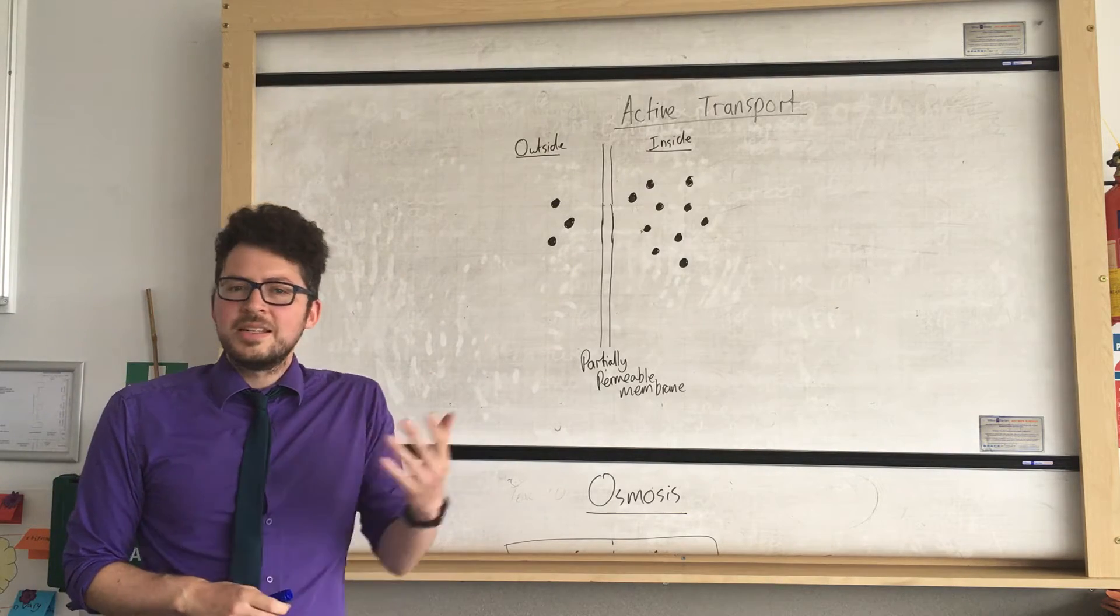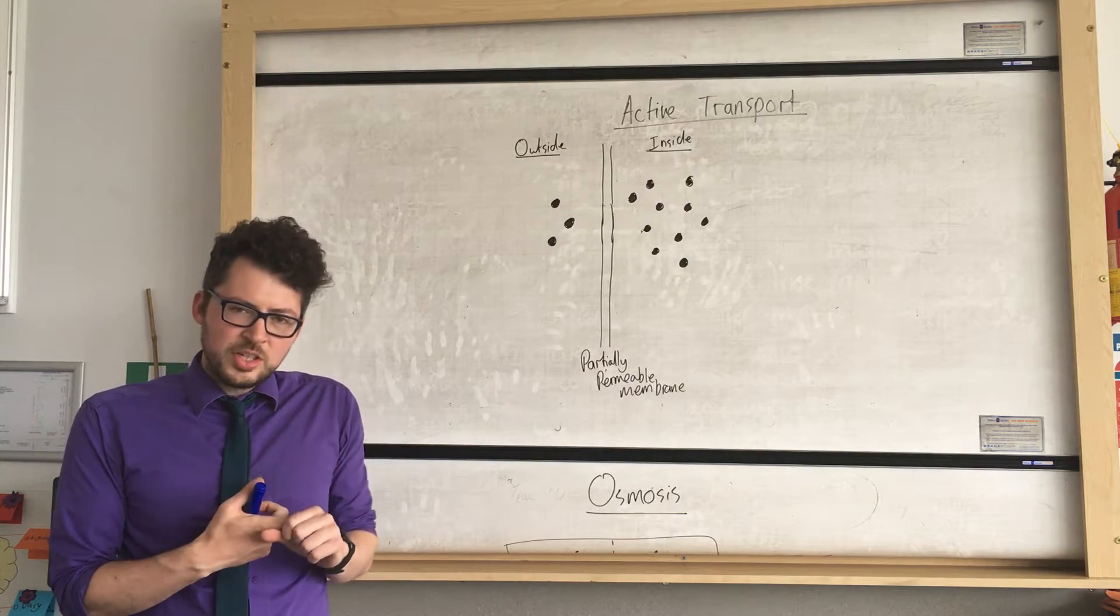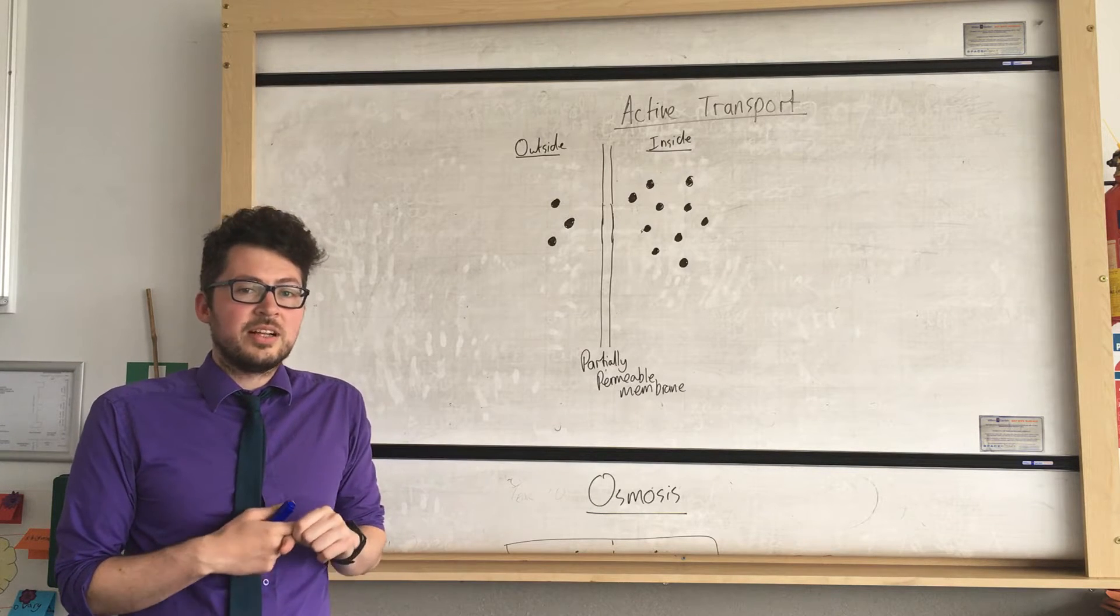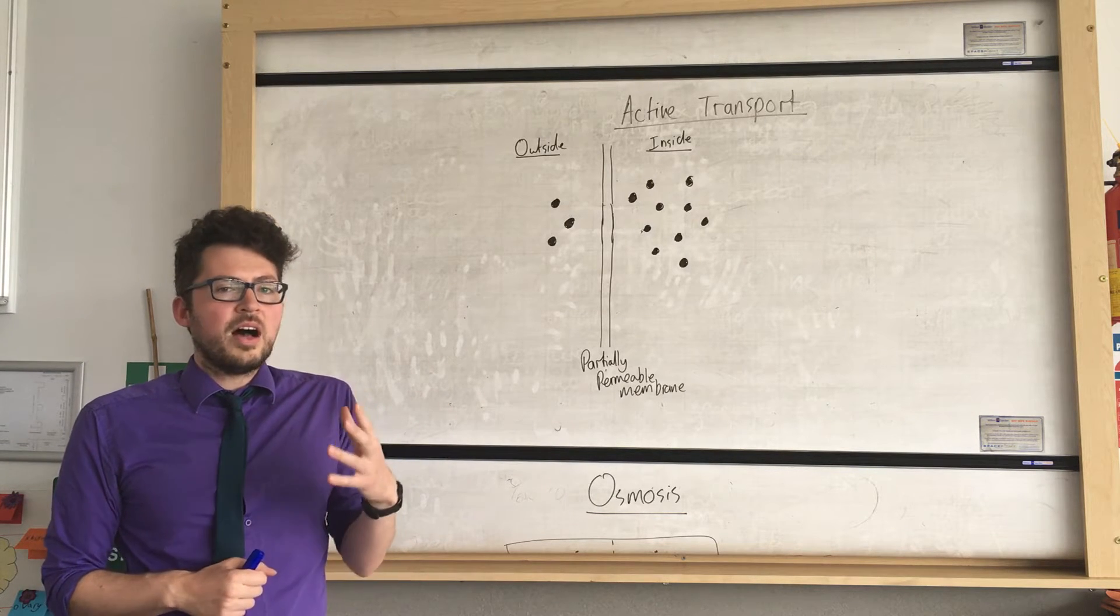Now I'll start off with active transport. As we've looked at before, diffusion happens and it allows materials to move into our cells. And diffusion happens from a high to low concentration.